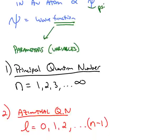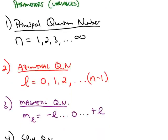The first variable is called the principal quantum number. It's important that you remember the abbreviation, which is a lowercase n. The rule is n can be any positive whole number — positive whole numbers starting at 1 and going all the way up to infinity.